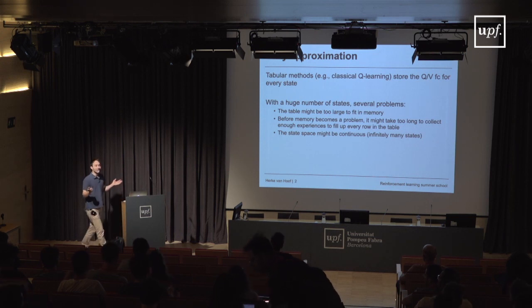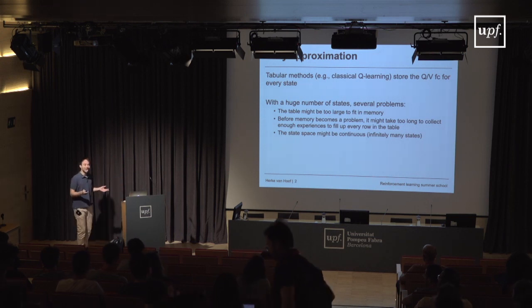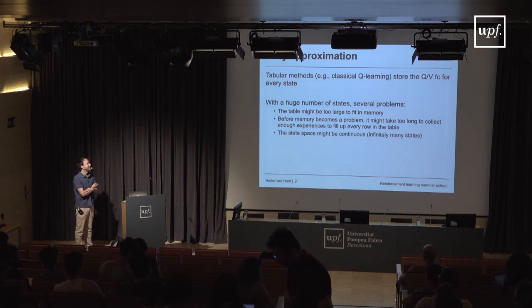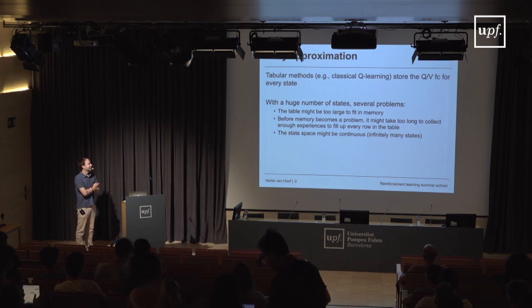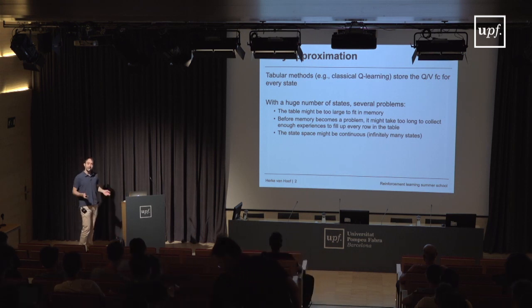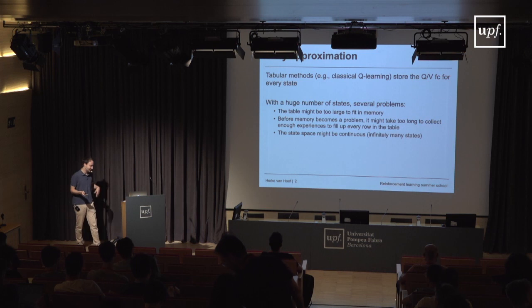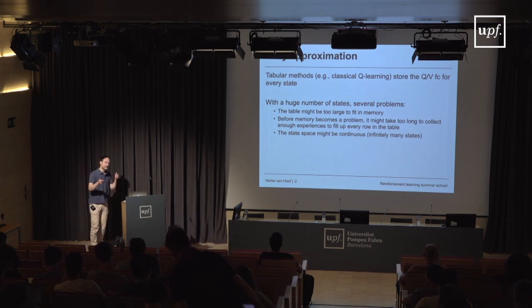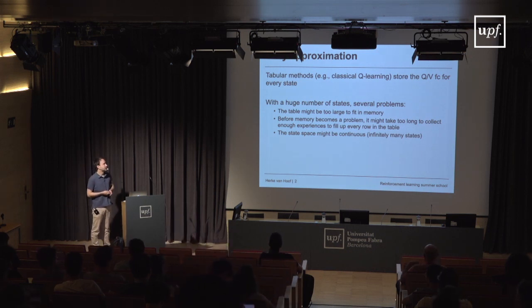First question is: why do we want to do approximation anyway? Yesterday with Olivier, you've probably looked at tabular methods, where we're building up a table for every state-action pair and you learn and store a Q function.